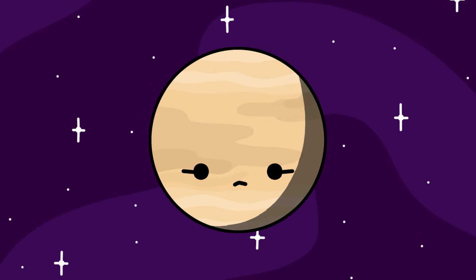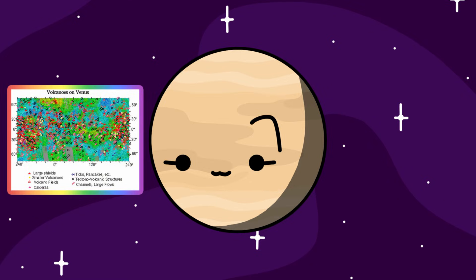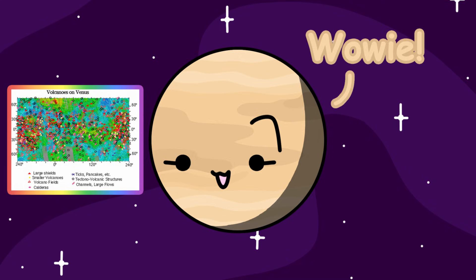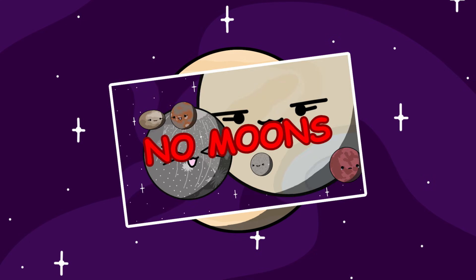So yeah, Venus is basically hell. Don't visit her. Venus is also known to have volcanoes — tons of them. Over 1,600 major volcanoes or volcanic features are known, and possibly over 100,000 smaller ones. Venus has no moons.